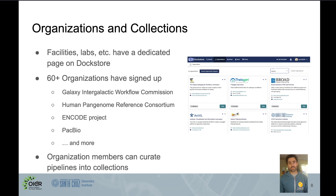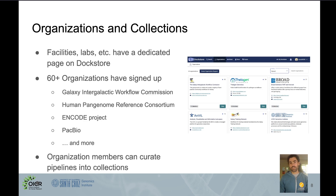We also hope to make workflows more easily findable by using Organizations and Collections. Organizations are a feature that allow facilities like labs or academic institutions to have a dedicated page on DocStore to curate their work. Currently over 60 organizations have signed up, including public groups like the Galaxy Intergalactic Workflow Commission, Human Pangenome Reference Consortium, and ENCODE Project, as well as private labs like PacBio. Organization members can curate their workflows into collections, so that workflows of a certain type or use case can all be displayed with documentation.